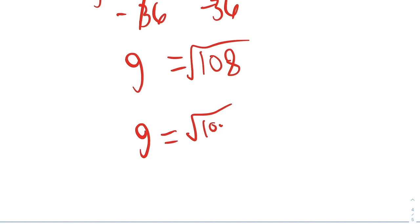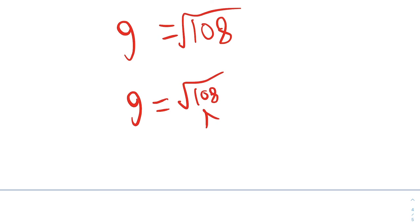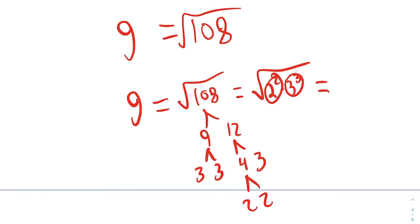And the purpose of these videos is so that you can break this number down into its factors. 108 is 9 times 12. 9 breaks down into 3 and 3. 12 breaks down into 4 and 3. 4 is 2 and 2. So we have square root of 2 squared times 3 cubed. We have a pair and a single pair with one left over. So that's 2 times 3 times square root of 3, which is 6 square root of 3, is equal to G.